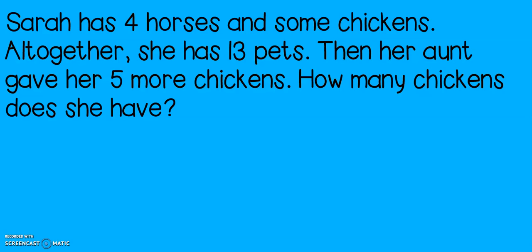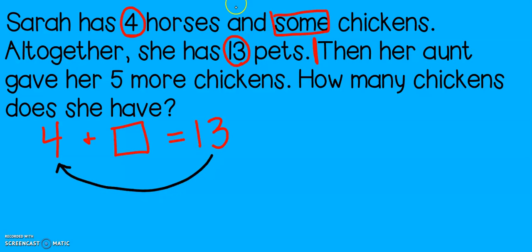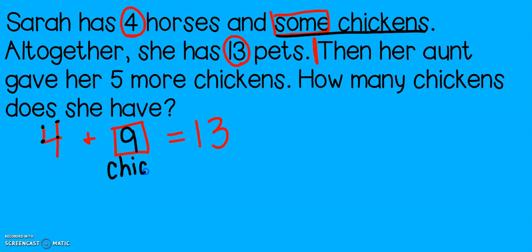Let's try one last problem together. Sarah has four horses and some chickens. Altogether, she has thirteen pets. Let's stop right there — she has four horses and some chickens. We don't know how many chickens yet, but we do know that she has thirteen pets. Four plus something gives me thirteen. I'm going to count down for this problem. I start with thirteen, twelve, eleven, ten, nine. That means she has nine chickens. I know they're chickens because looking back at my problem, she has four horses and some chickens — so we have nine chickens.